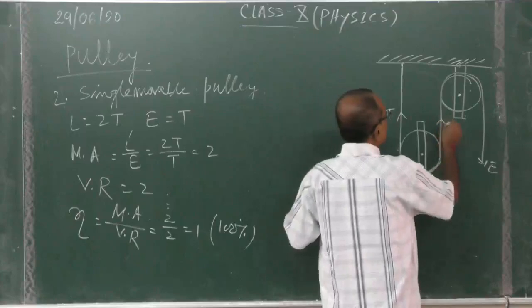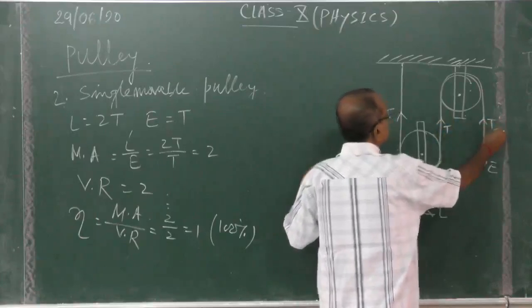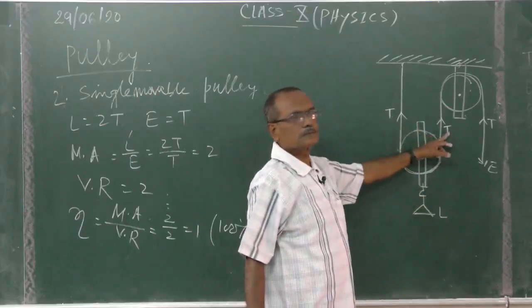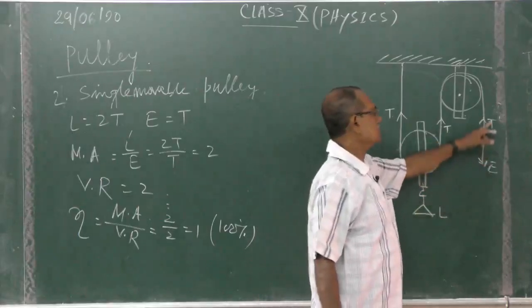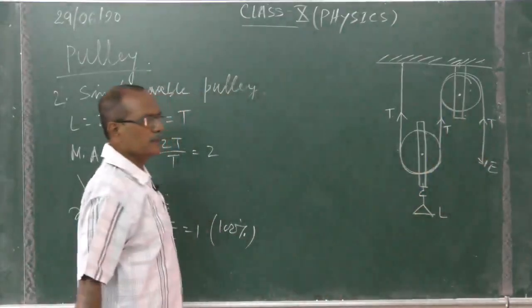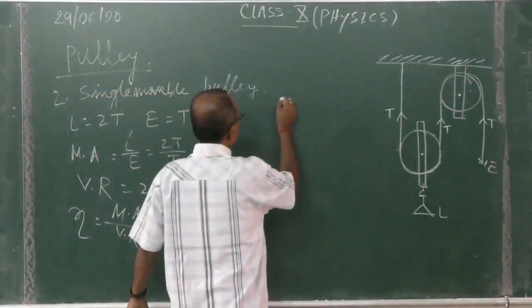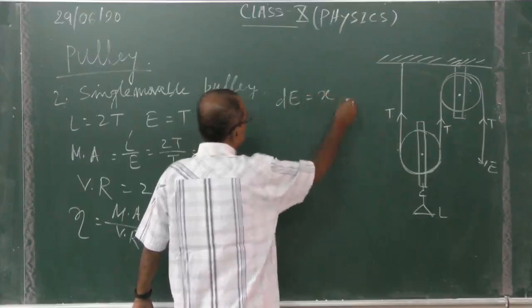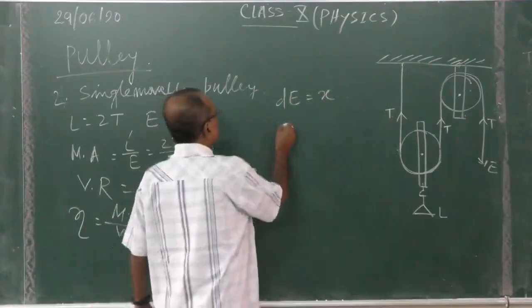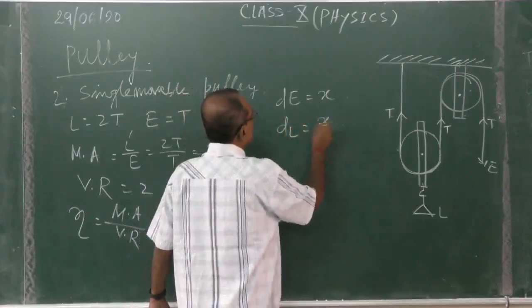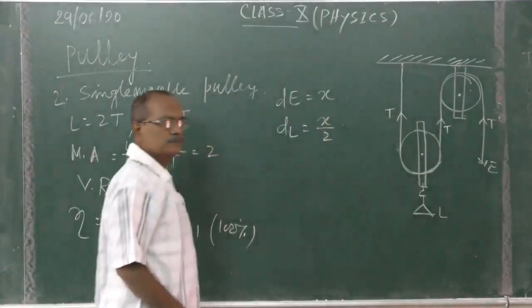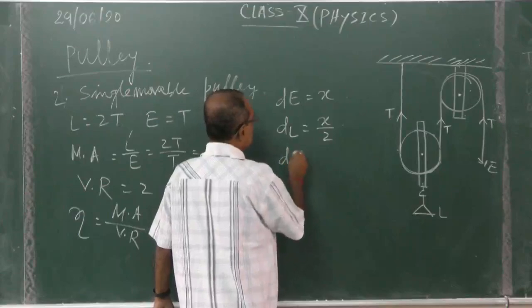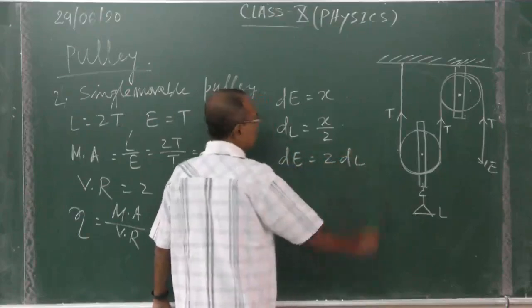So then again what happen, here tension, tension again. Load is what, load is equal to 2T, effort is equal to single T, same way, same way. As I told, if say dE is equal to, say it is x, so then dL will be how much, x by 2, x by 2. It means dE is equal to 2dL, other way.